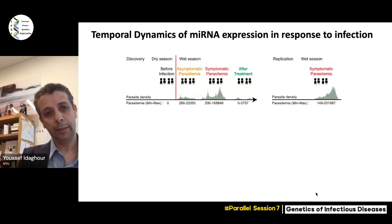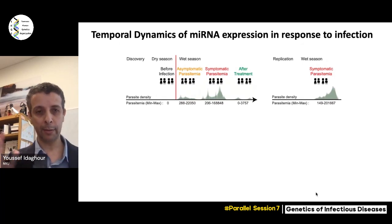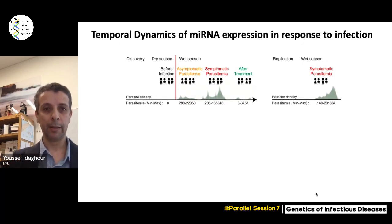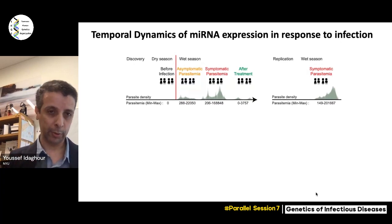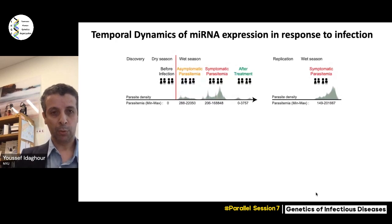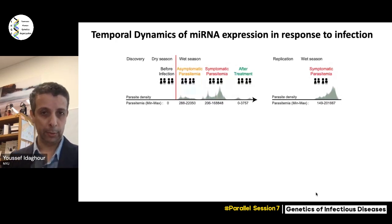After symptoms appear, we sample them, they are given treatment, and we sample them again three weeks later. This is a matched design, which is a very nice way to control for other variables — it's not a cross-sectional design. We did this for one year, then went back the following year for the replication study, focusing mainly on symptomatic parasitemia in the same area of Burkina Faso.